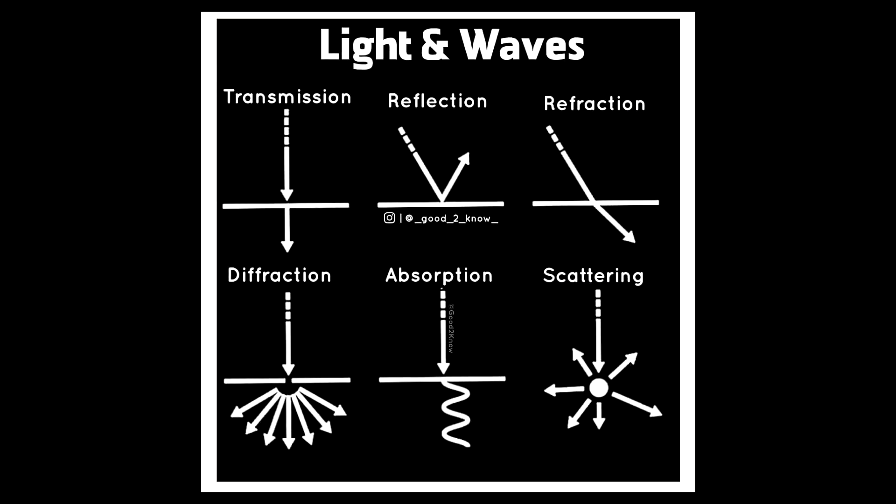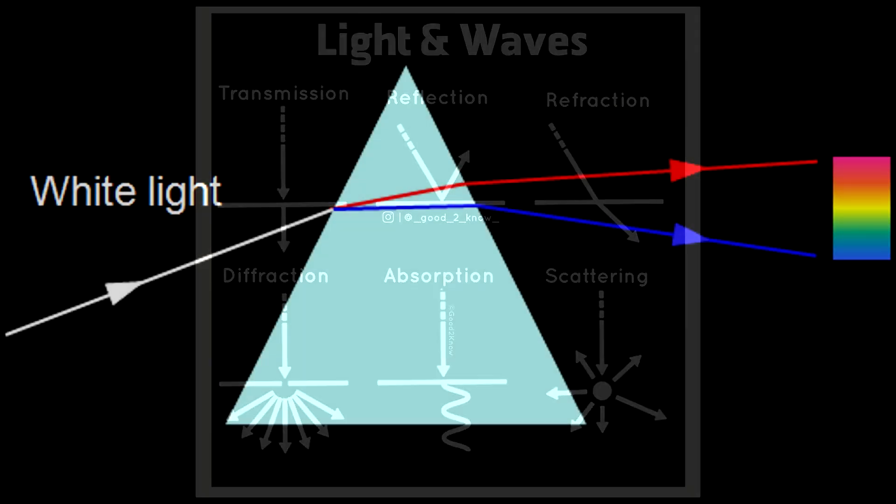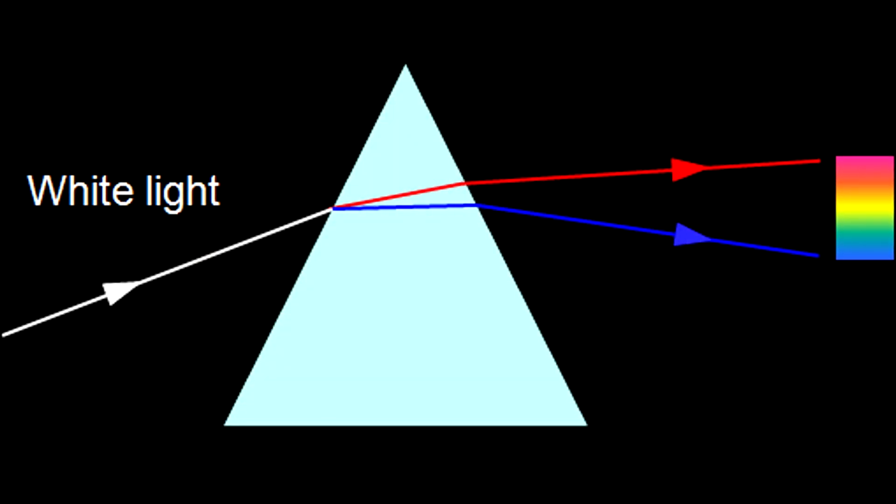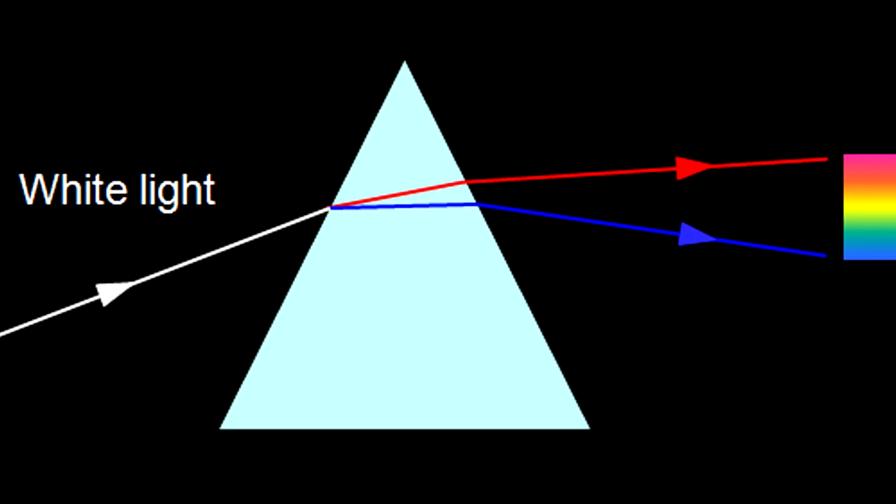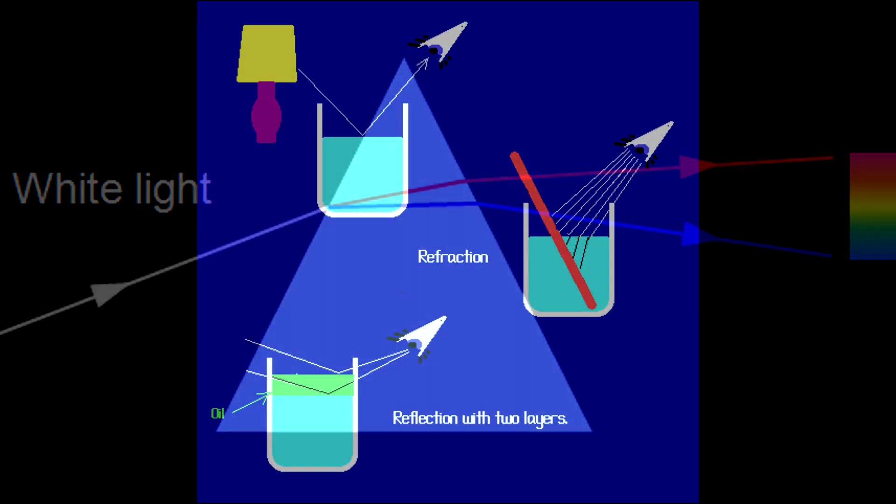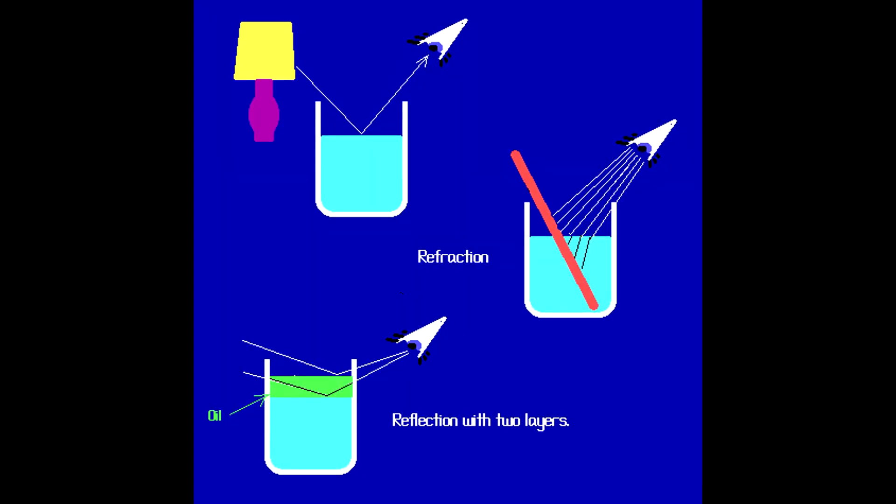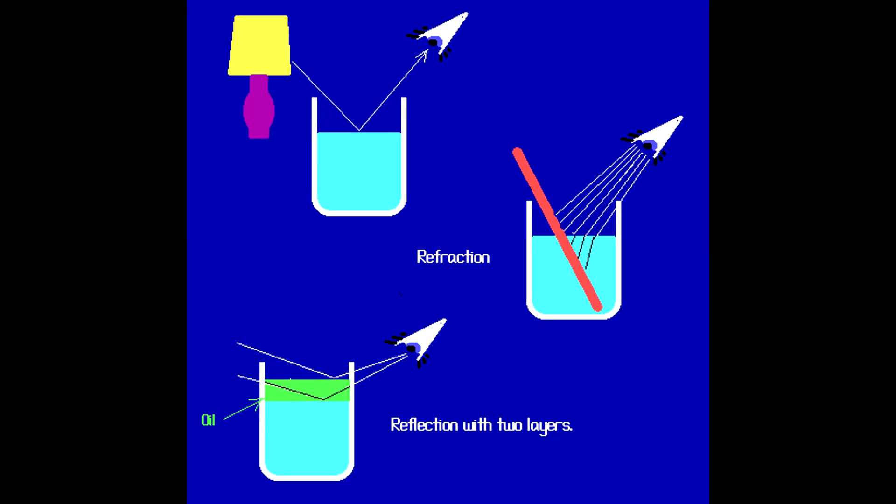Further, refraction of light is a phenomenon in which light rays change their direction of travel when passing from one medium to another with different densities. This causes objects in water to appear displaced or distorted compared to their position in the air. This is why faces in water are so creepy.